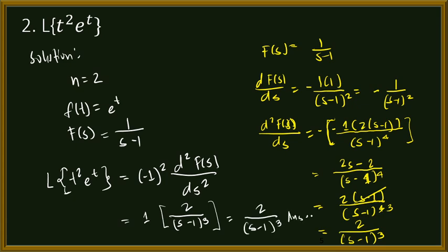Substituting back, negative 1 squared is 1, times 2 over s minus 1 cubed, so the answer is just 2 over s minus 1 cubed. This is now the Laplace transform of t squared e to the power of t.